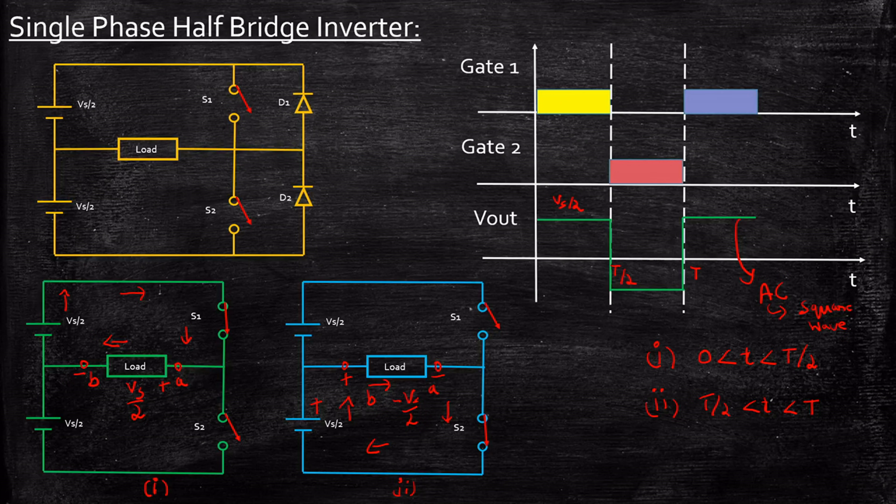Throughout the operation, you might be having a doubt: why did I consider D1 and D2 in the circuit and not explain them during the operation? Since it's a resistive load, you don't have any purpose for D1 and D2. But in case of an inductive load, you will have to use both D1 and D2. That is where they will play an important role, which I will explain in my upcoming videos when we look at operation with respect to RL load.